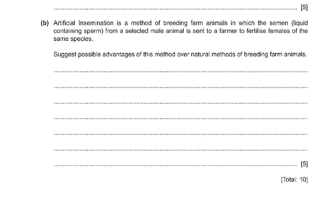Question 9b: artificial insemination involves semen from a selected male being sent to a farmer to fertilize females. Advantages over natural breeding: the farmer does not need to keep a male animal; it prevents inbreeding; sperm can be transported from anywhere in a container of liquid nitrogen. It is a form of selective breeding where desirable features are selected, increasing chances of successful fertilization. It is also quicker, easier, and more convenient.